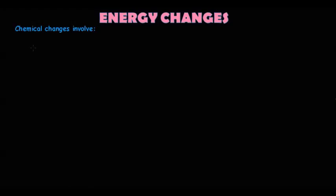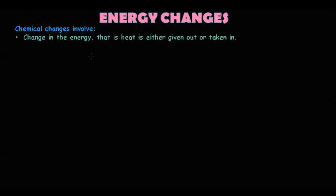Let's start with chemical energy changes first. Whenever a chemical reaction happens, how do we know it's a chemical change and not a physical change? When a chemical change takes place, there is a change in energy — either heat is given out or heat is taken in — meaning the temperature may rise or decrease, or one or more new substances are formed.